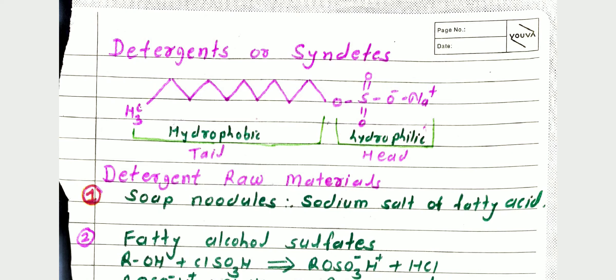Detergents are also called as syndates. First, we see the definition of detergent. Detergent is a surface acting agent having cleansing action. These detergents are also called as surface acting agents. Another term is 'syndate' — SYN means synthetic, DET means detergents; therefore synthetic detergents are called as syndates.